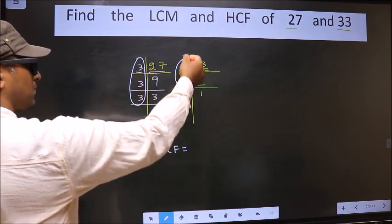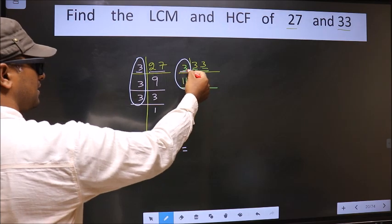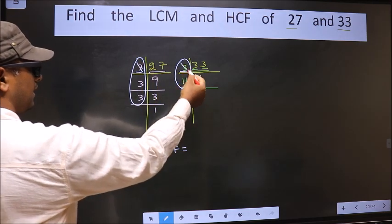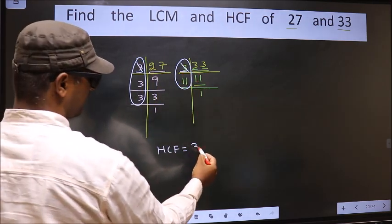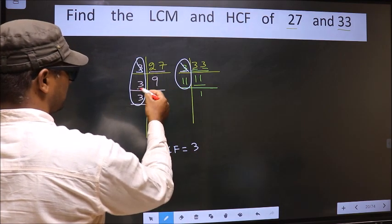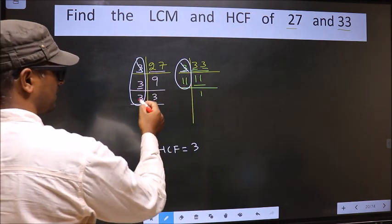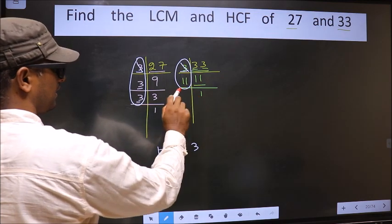Starting with the number 3. Do we have 3 here? Yes. So you cut 3 and write here. Next number 3. Do we have 3 here? No. Next number 3. Do we have 3 here? No.